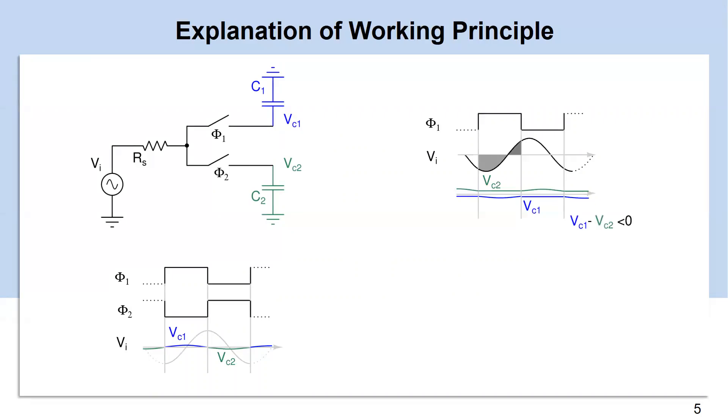Now consider a case where phi1 leads input by more than 90 degrees. Clearly, C1 accumulates a net negative charge over on-time of phi1. At steady state, VC1 decreases from 0, thus difference of VC1 and VC2 is negative. On the other hand, if phi1 leads by less than 90 degrees, then difference of VC1 and VC2 is positive.